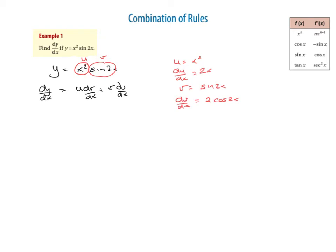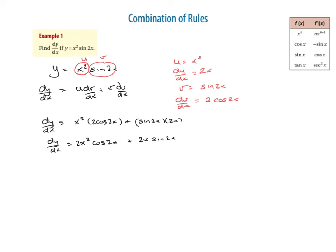Finishing it off: dy/dx equals u, which is x squared, times dv/dx, which is 2cos(2x), plus v, which is sine 2x, multiplied by du/dx, which is 2x. Tidying that up, we get dy/dx equals 2x² cos(2x) plus 2x sin(2x). And we're finished.